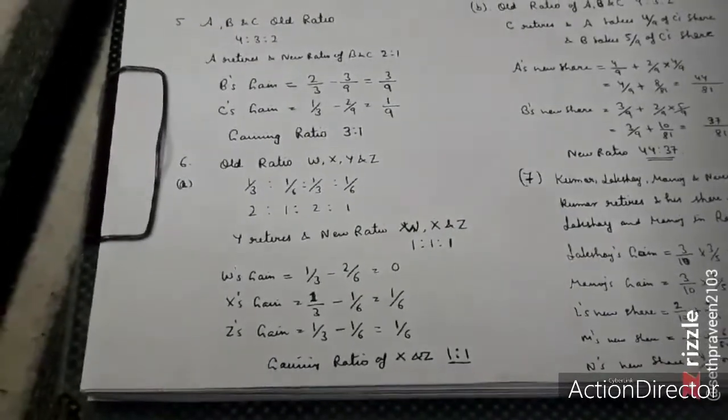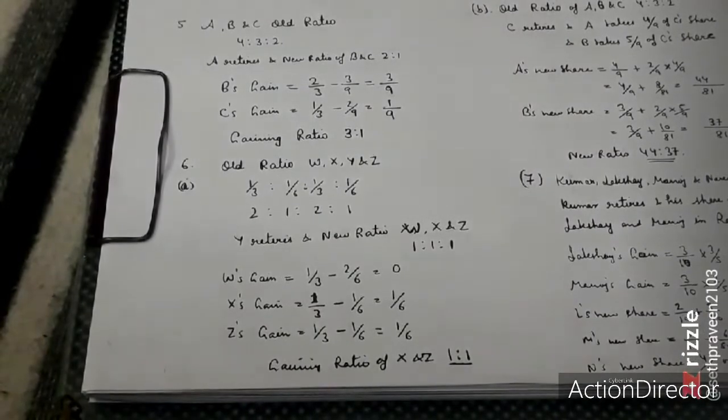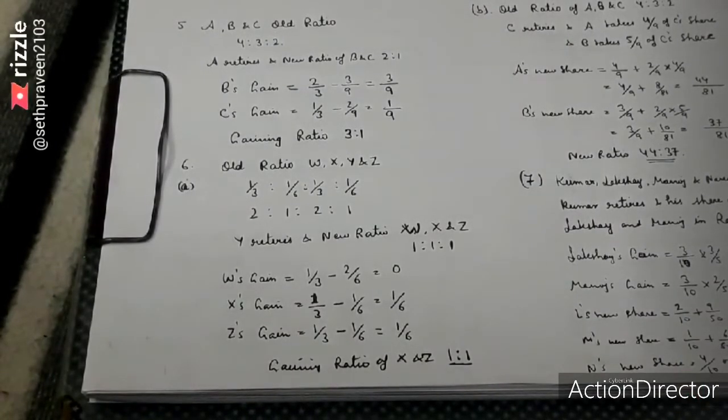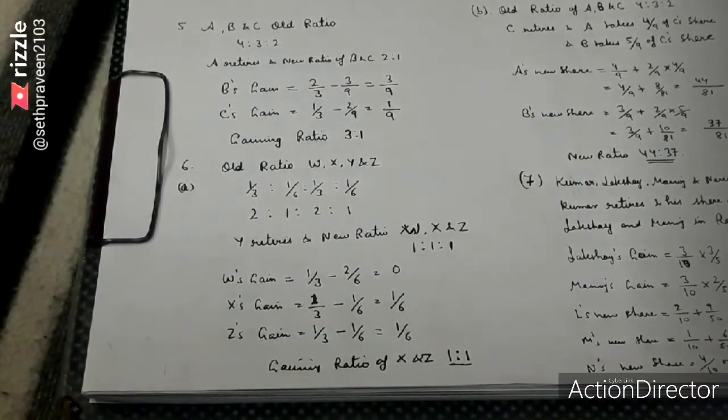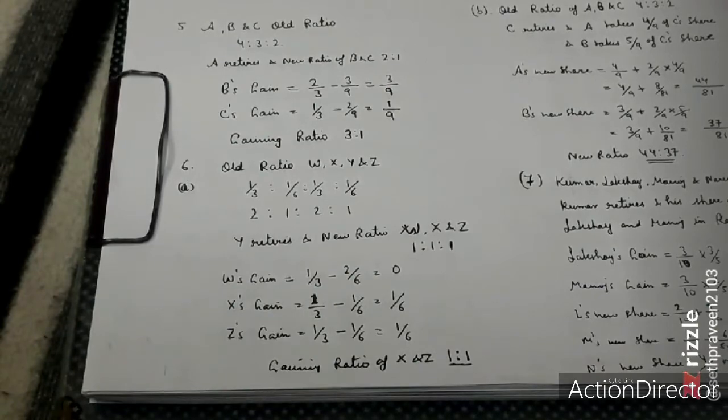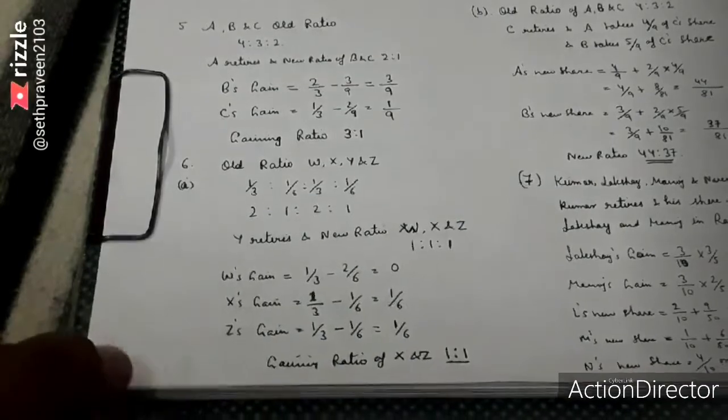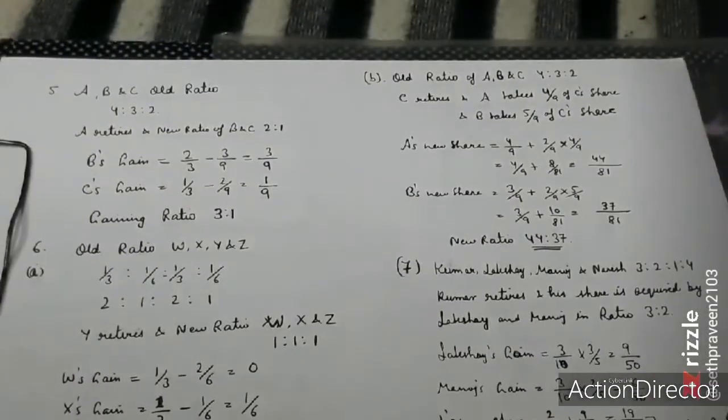Welcome to question number 6. The old ratio was 2 to 1 to 2 to 1. The new ratio was given for W, X, Y, Z as 1 to 1 to 1. We minused new from old: W gains nothing, X, Y, Z gain 1 by 6, 1 by 6, which is the gaining ratio of 1 to 1.